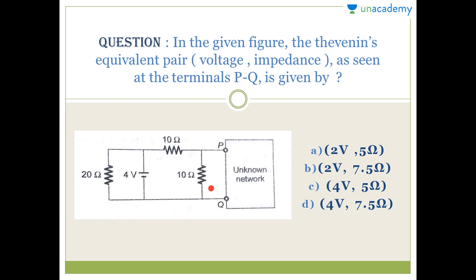Let's analyze the circuit structure. The circuit has a 20 ohm resistance, a 10 ohm resistance, a 4 volt battery, another 10 ohm resistance, and PQ terminals. We can treat the unknown network as a load. The purpose of Thevenin's theorem is to find the current and voltage across any circuit element — for example, across the 10 ohm resistance at the PQ terminal. We could also apply KVL, KCL, mesh, or nodal analysis.